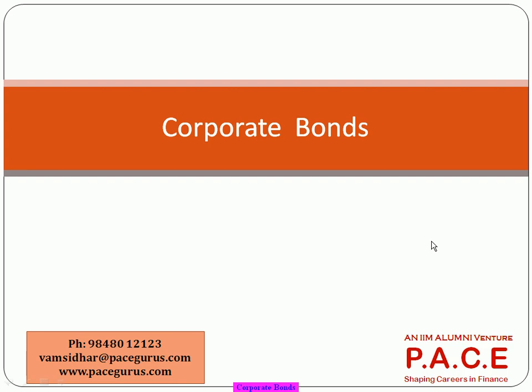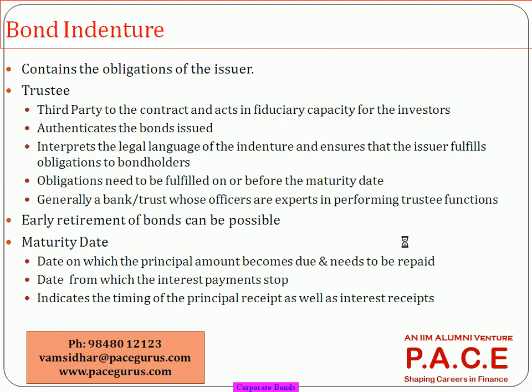This chapter on corporate bonds is primarily to understand what the various kinds of bonds are, what the various cash flows associated with a bond are, and what the various mechanisms are available if you want to close, call back, redeem, or retire the bond.